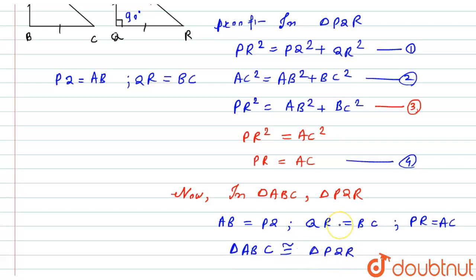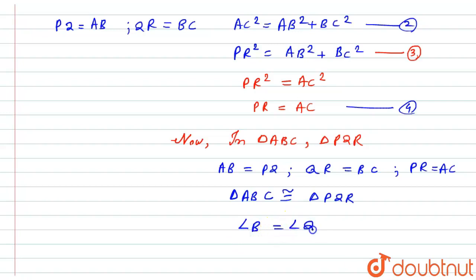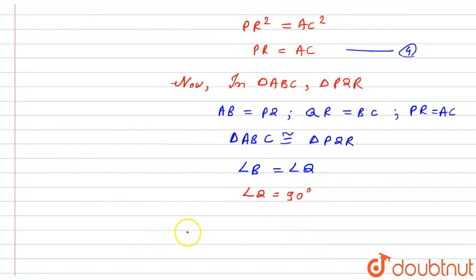Since the two triangles are congruent, their corresponding parts are also congruent. Therefore, angle B equals angle Q. Since angle Q is given as 90 degrees, angle B also equals 90 degrees. Hence it is proved.